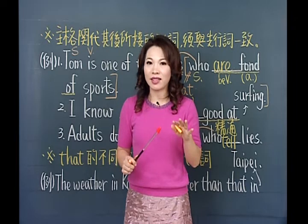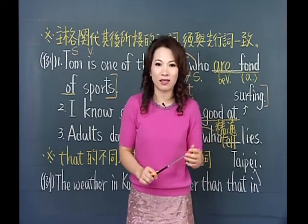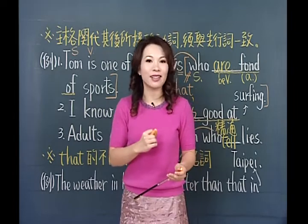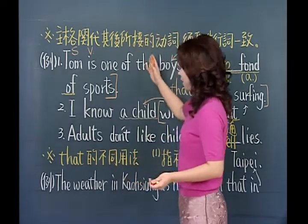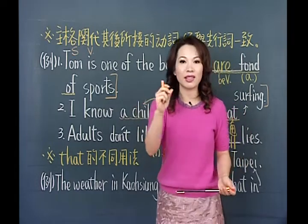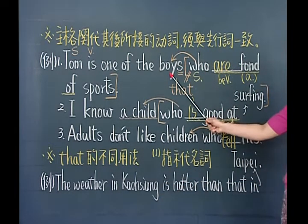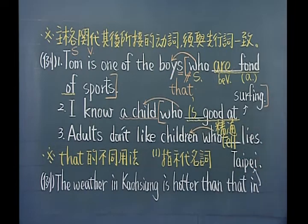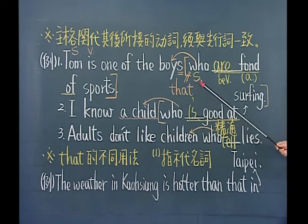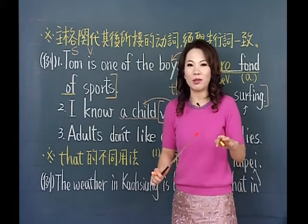很多同学觉得关系代名词很难，其实它不是难，而是用法比较多样、变化比较多。只要你了解基本道理，难的句子都是从简单的句子变来的。在这个部分，动词应该怎么表现，要看先行词，主格关带代替的就是前面的先行词，所以动词要看它是单复数就可以了。不管先行词为人、为事物、为动物，都可以用that这个通用的关系代名词来表现。